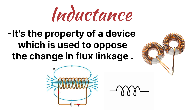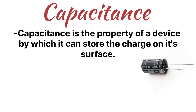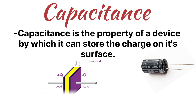Now let's talk about capacitance. Capacitance is the property of a device by virtue of which a material stores charge on its surface. The device specifically designed to store charge is called a capacitor. So the capacitor is the device, and capacitance is the property of that device.